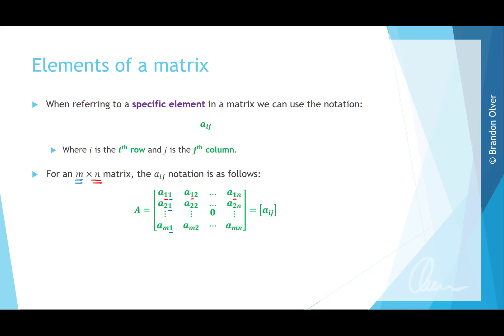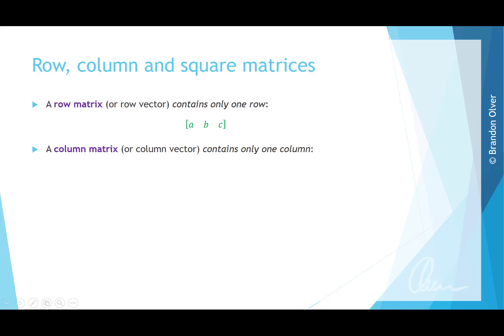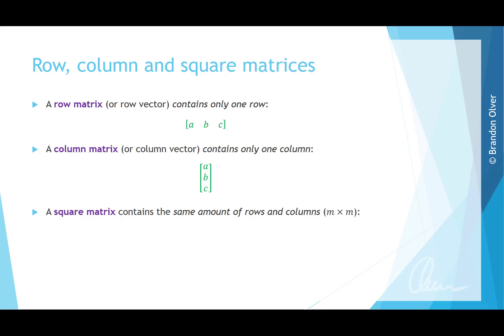There are also certain special types of matrices. A row matrix, or row vector, contains only one row. A column matrix, or column vector, contains only one column — for example, one column and three rows. Finally, square matrices contain the same number of rows and columns, so the order is M times M.